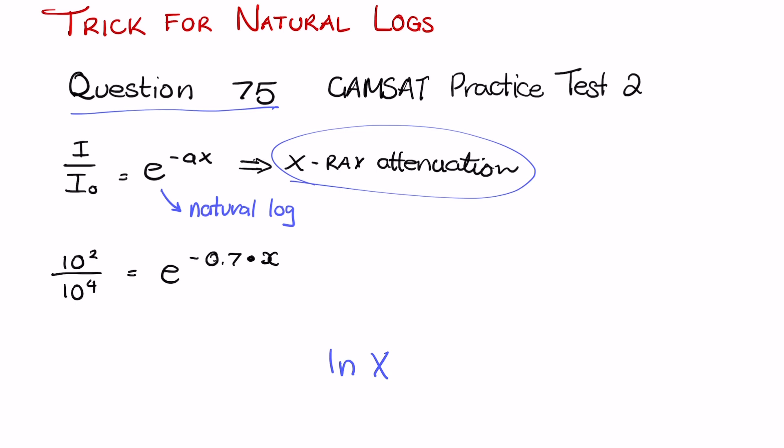I won't go through the specifics of the question, but essentially what they tell you is that I equals 10², I₀ is 10⁴, and -a is -0.7, and they're asking you to find x. So in order to solve this equation we simply calculate the left side first, and 10² divided by 10⁴ is 10⁻². And if that confuses you a bit, I'll go through scientific notation in a different video, but just take my word for it now that that equals 10⁻². And that will equal e^(0.7×x).